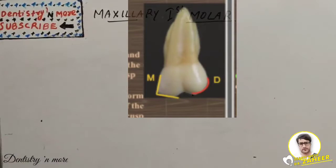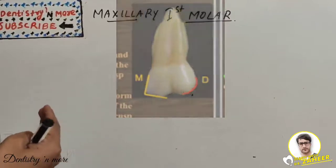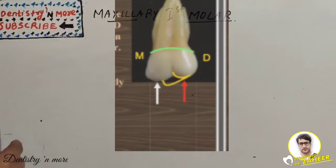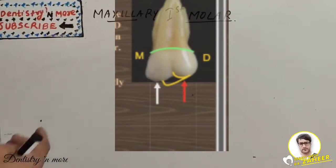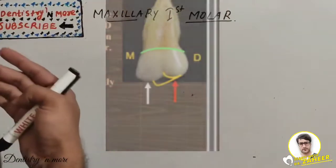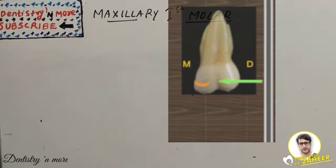The mesio-lingual cusp is the largest and longest cusp, with a mesio-distal width of about three-fifths of the mesio-distal crown diameter. The disto-lingual cusp is spheroidal. The cervical outline is irregular and slightly convex towards the root, and the lingual surface is convex.